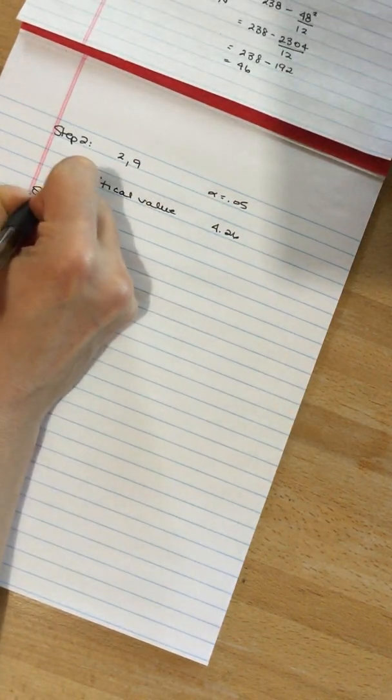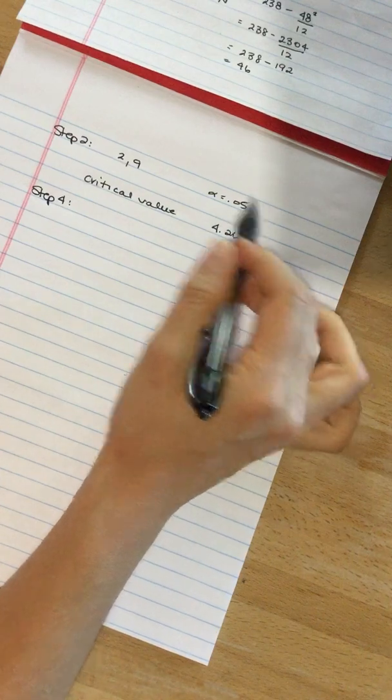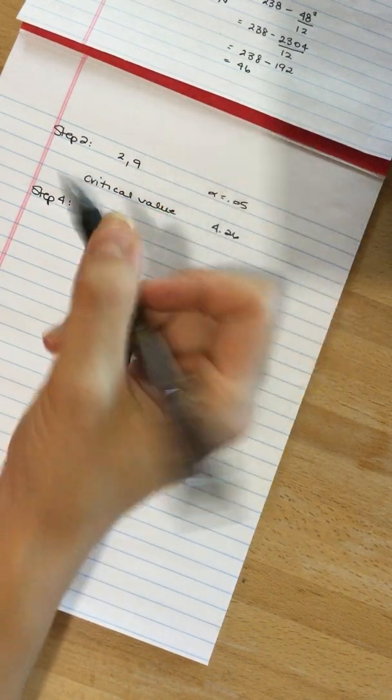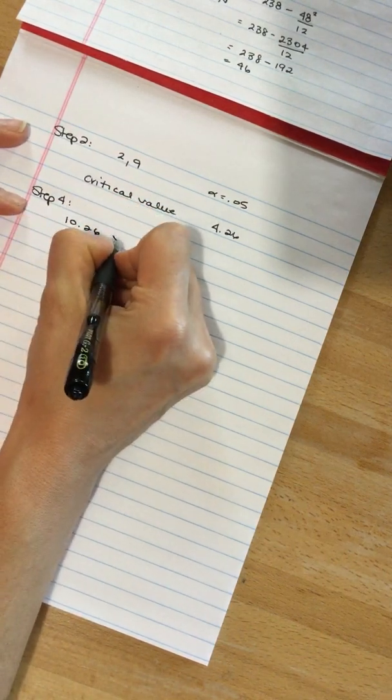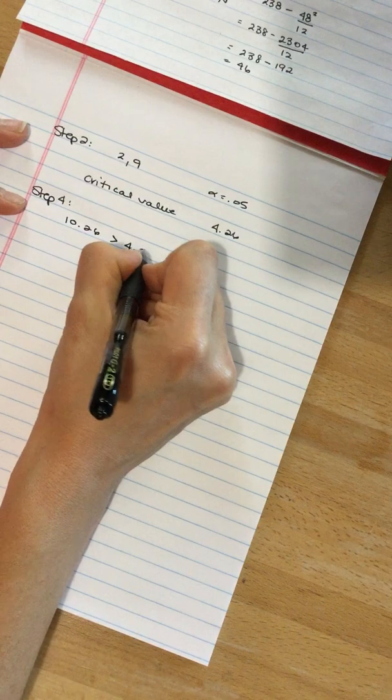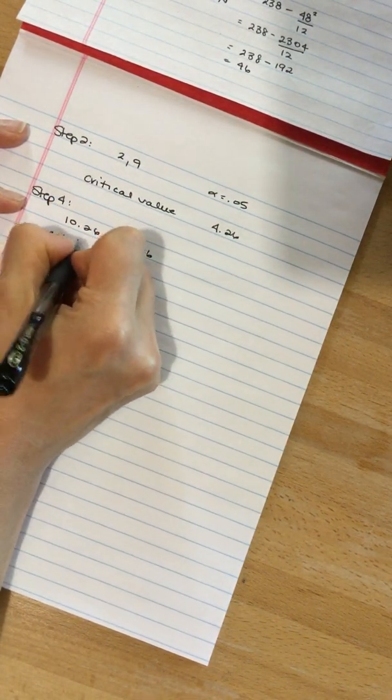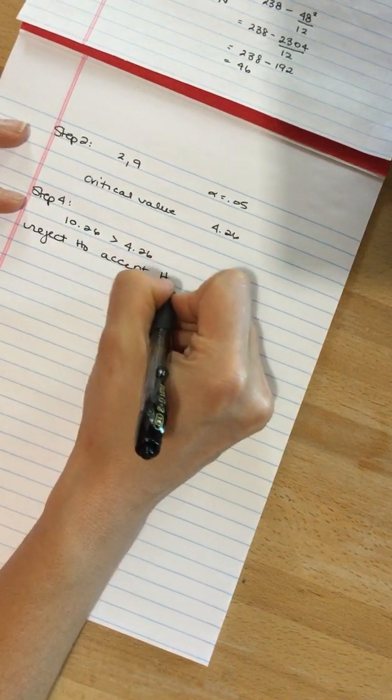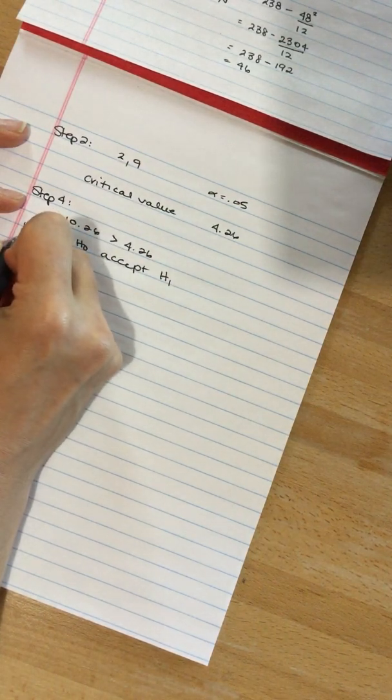So now for step 4, what we need to do is compare our critical value to the value that we calculated, our F statistics. So our calculated value is 10.26 and that is larger than 4.26. So we're going to reject the null and accept the alternate. There is a significant treatment effect.